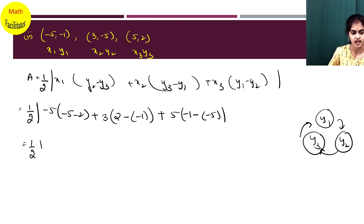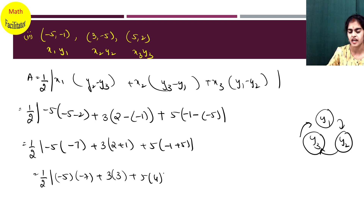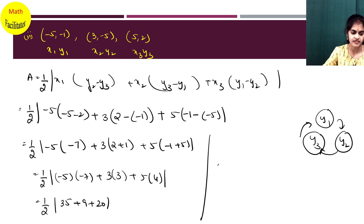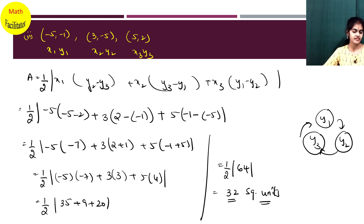That equals half modulus of: (-5) into (-5 minus (-2)) = (-5) into (-7) = 35; plus 3 into (-2 plus 1) = 3 into (-1+... wait: y3 minus y1 = -2 minus (-1) = -1, but recalculated: 3 into 3 = 9; plus 5 into (-1 plus 5) = 5 into 4 = 20. So half into (35 + 9 + 20) = half into 64 = 32 square units. Don't forget to write square units.